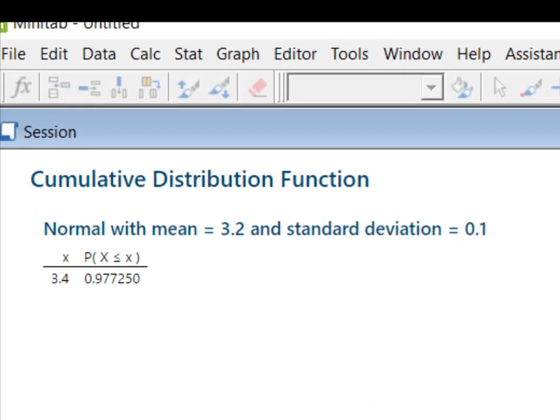What Minitab tells us based on the cumulative distribution function is that the probability of finding a sample mean less than 3.4 pounds is 0.977250.